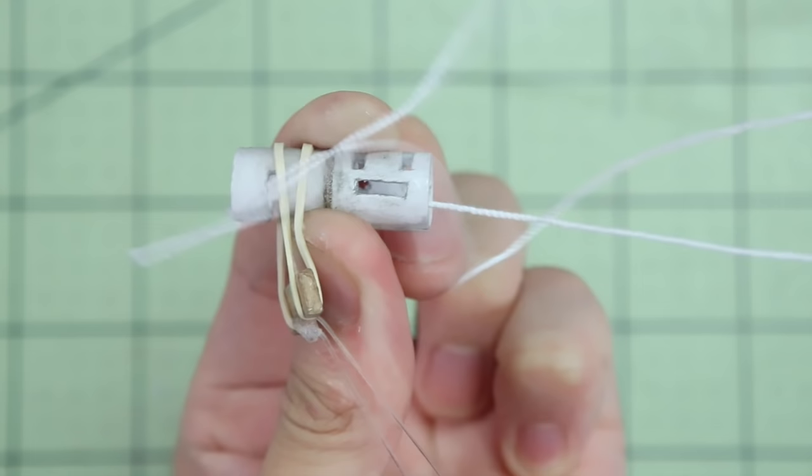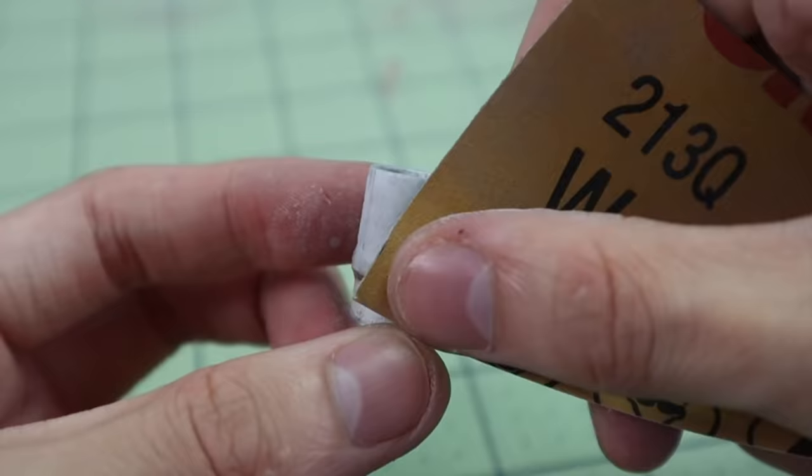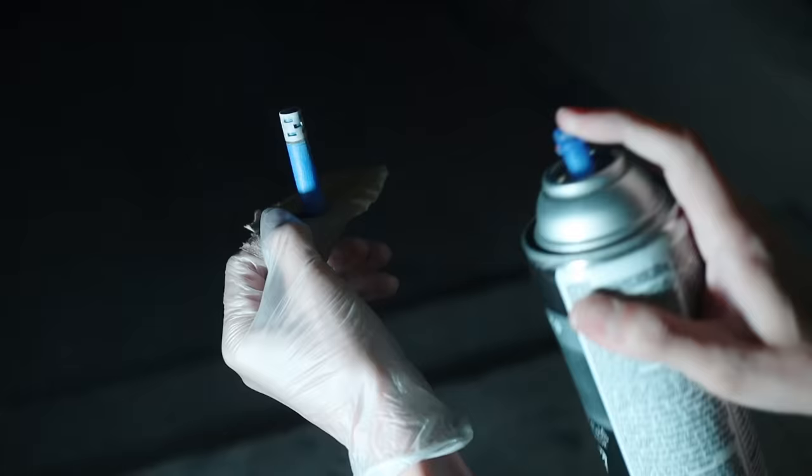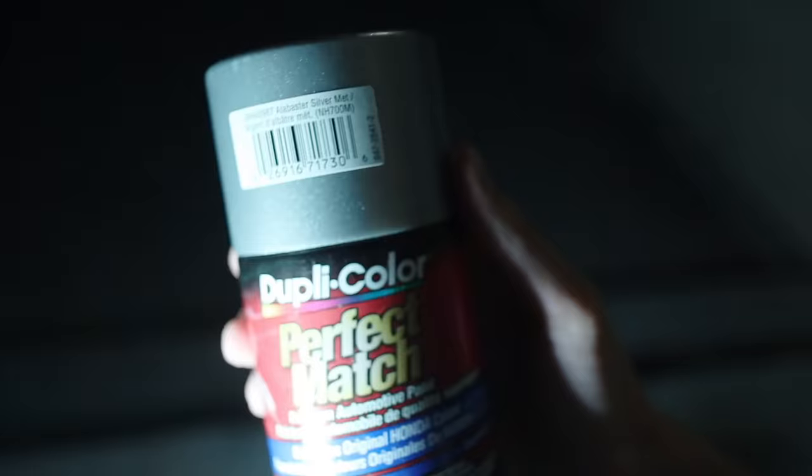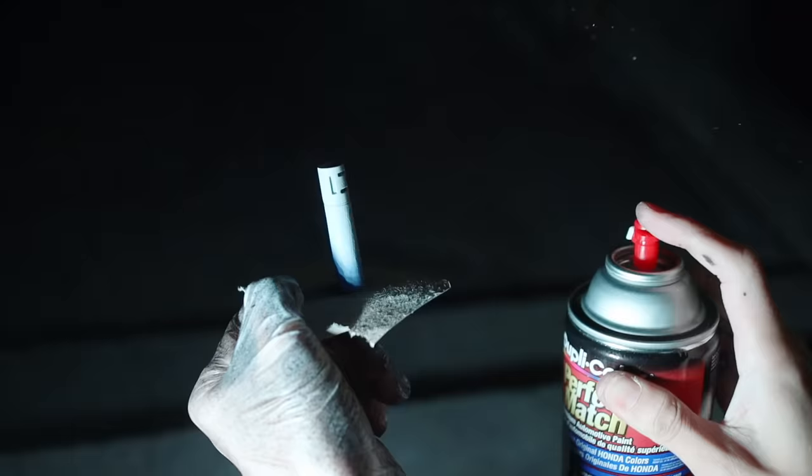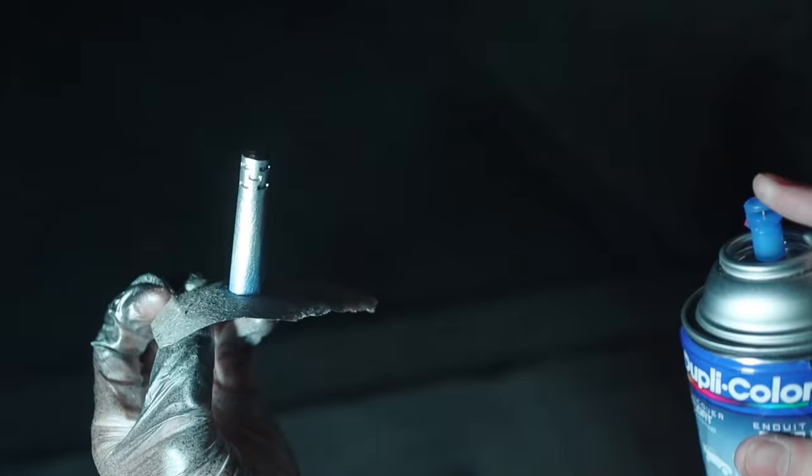Once you're happy with the release mechanism, now would be a good time to paint it. I started with some Duplicolor filler primer, followed by Duplicolor Perfect Match Alabaster Silver, and then a Duplicolor gloss clear coat.